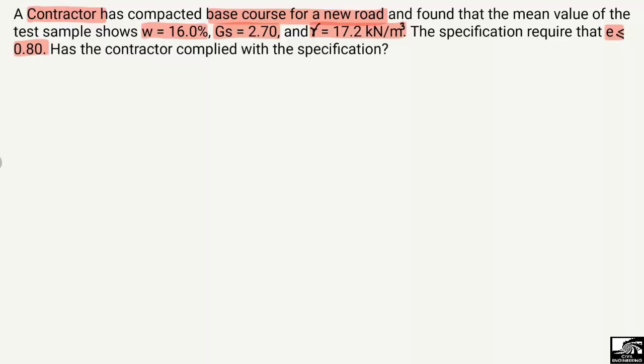The question is: has the contractor complied with the specification? We need to find the void ratio for the base course and determine whether it is less than or greater than 0.80, in order to verify compliance with the specification that e should be less than 0.80.